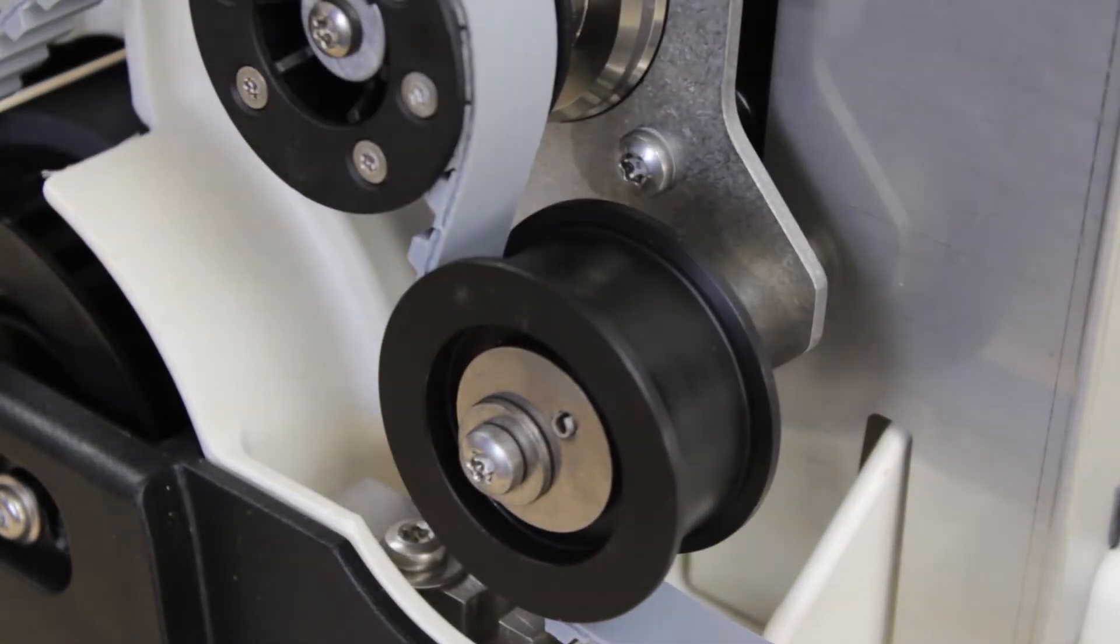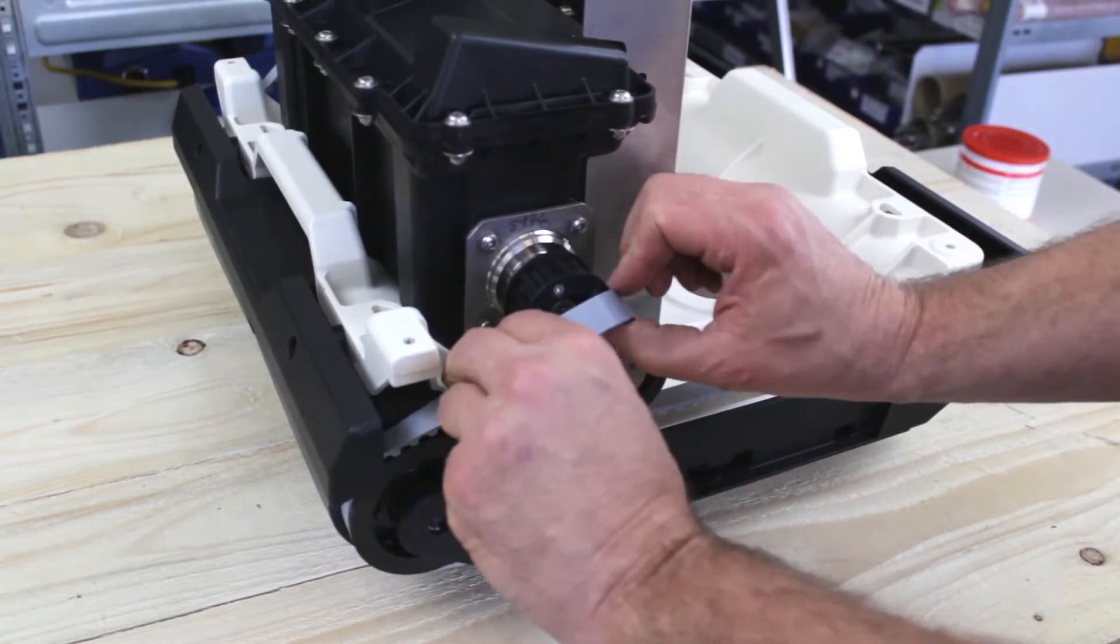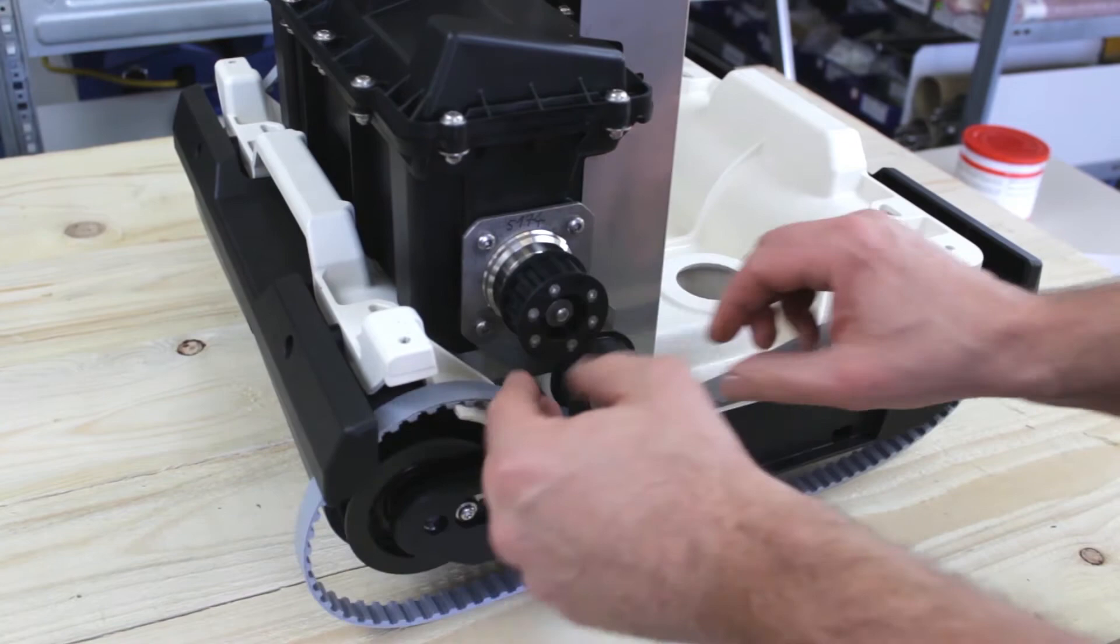The screw must not be unscrewed under any circumstances. Now the drive belt can be detached from the tension roller with a little dexterity.